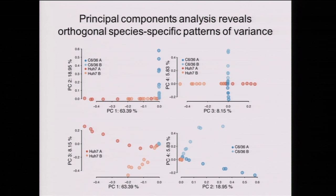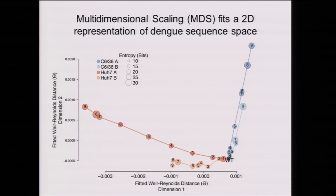We can capture all the variants by fitting a 2D representation of genetic distance between these populations using Weir-Reynolds distance. Again, the wild-type population is at the origin, and the viral lineages move away in host-specific orthogonal trajectories. I'm also showing the diversity of these populations as Shannon entropy, and you see an accumulation of diversity especially as the trajectories start to slow down.